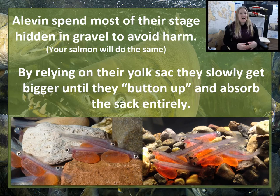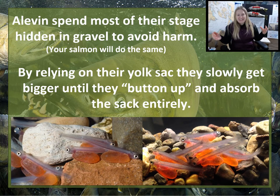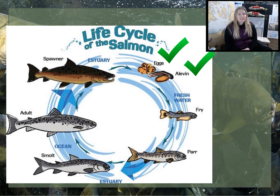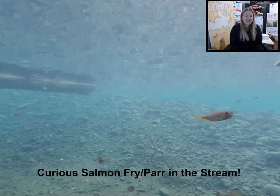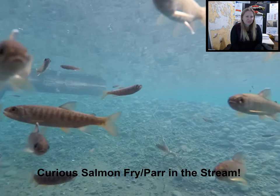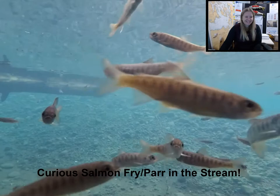Alevin spend most of their stage hidden in gravel to avoid harm. By relying on their yolk sac, they slowly get bigger until they button up and absorb the yolk sac entirely. Eventually they swim up out of the gravel to the water surface, take a gulp of air, and inflate their swim bladder so they can balance and swim easily — and become fry. Salmon fry live in freshwater streams or lakes.